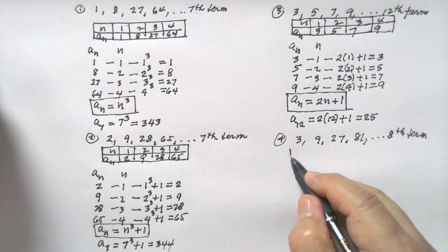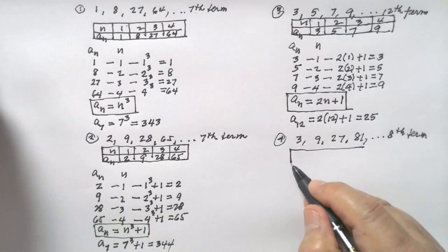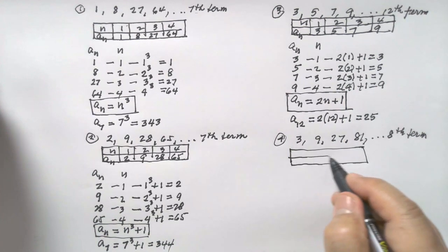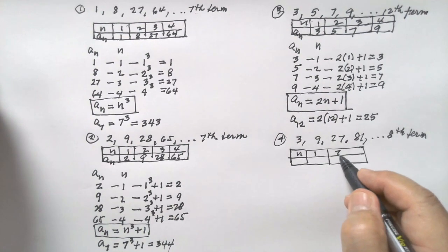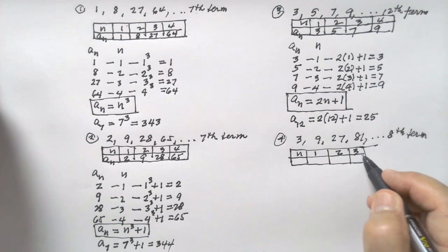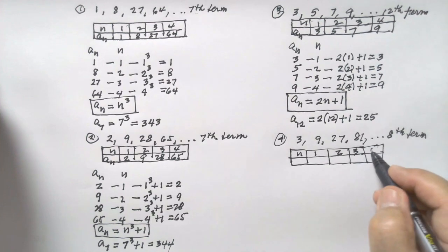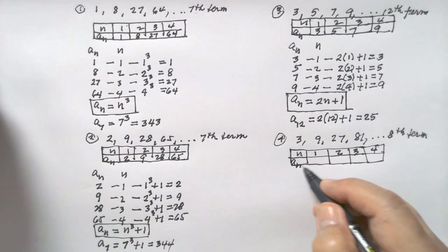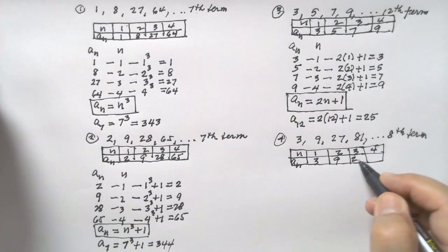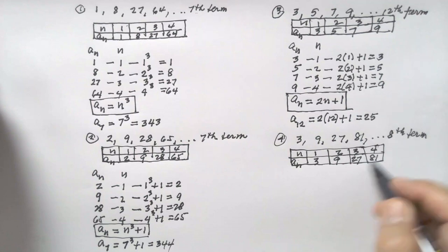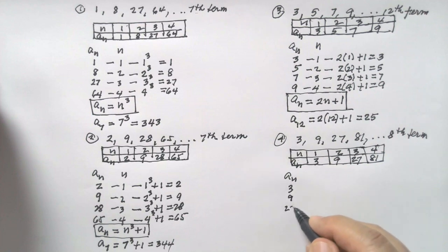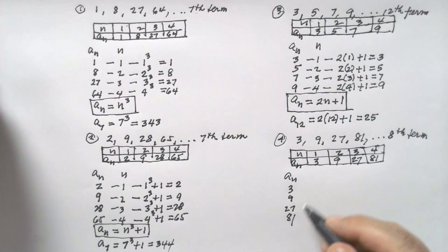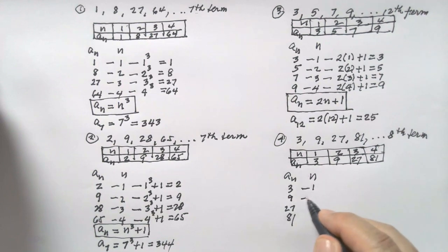Let's put this in a table. For n: 1, 2, 3, 4. A sub n: 3, 9, 27, 81.